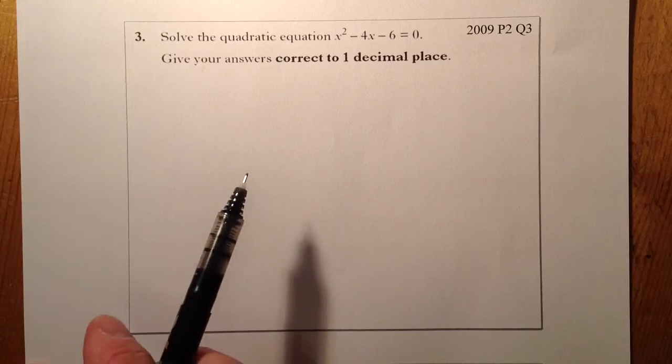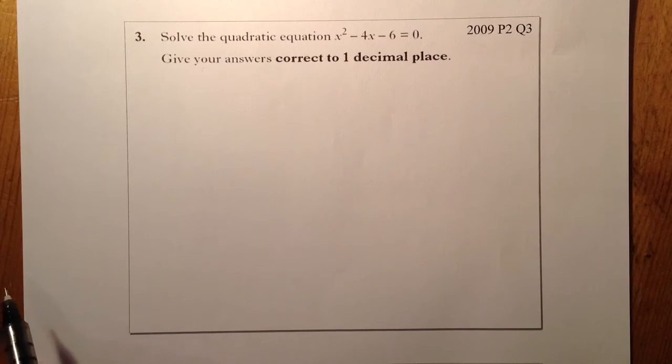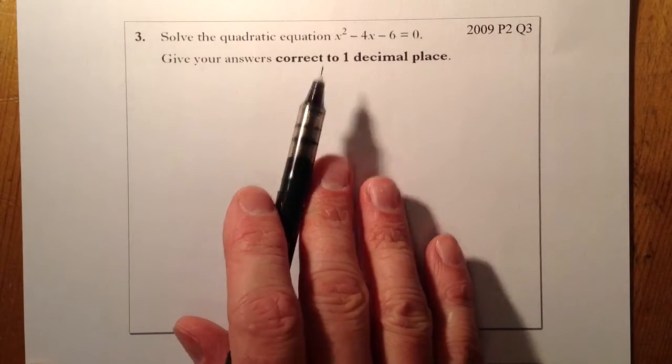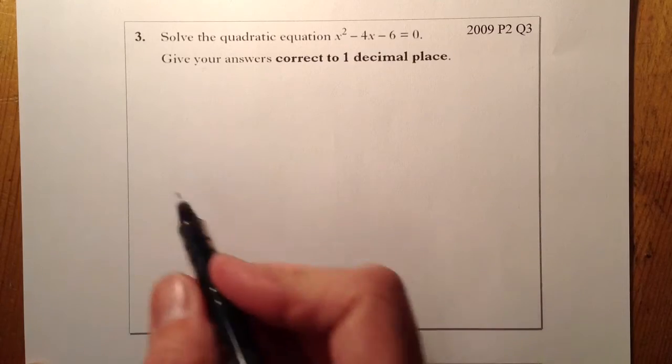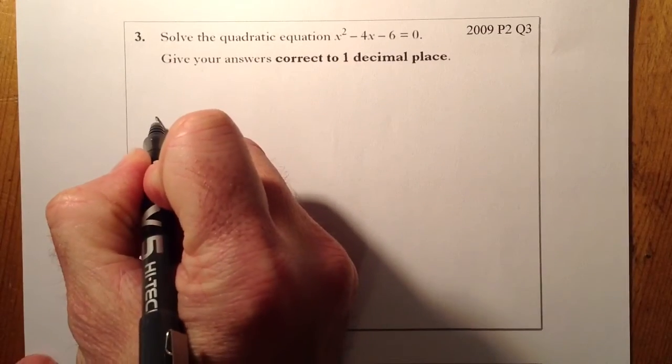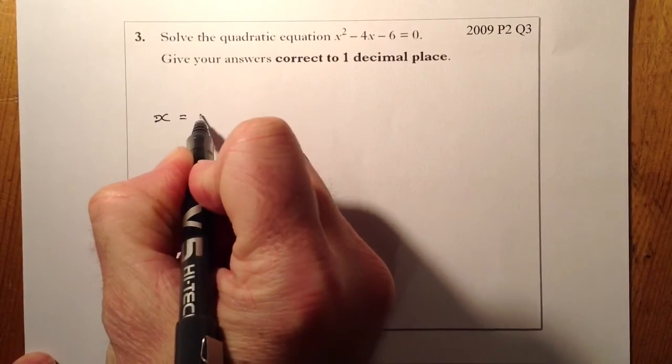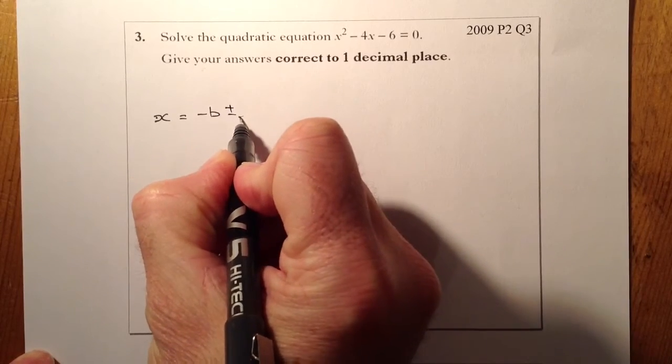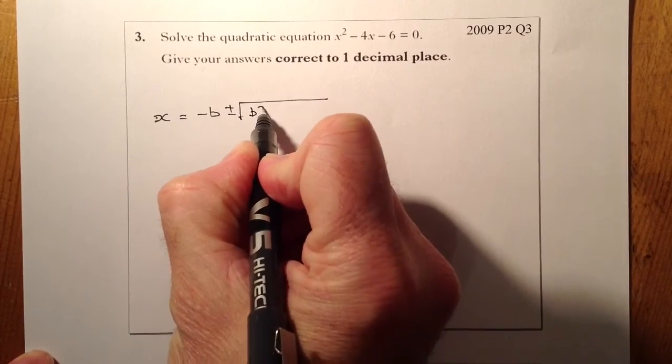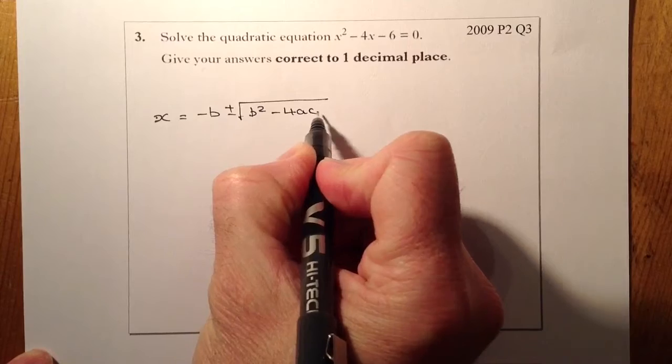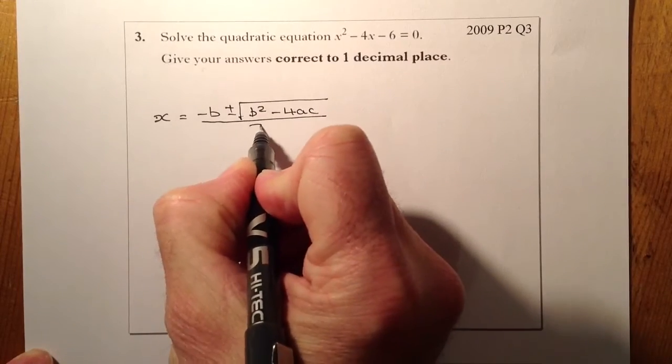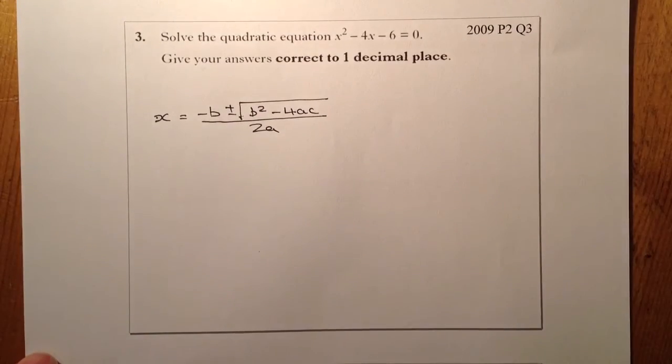What I'm going to do is look at the formula list and see if there's a formula that I can use for working out this here. The formula we're going to use is to find out what x is: minus b plus or minus square root of b squared minus 4ac all divided by 2a.